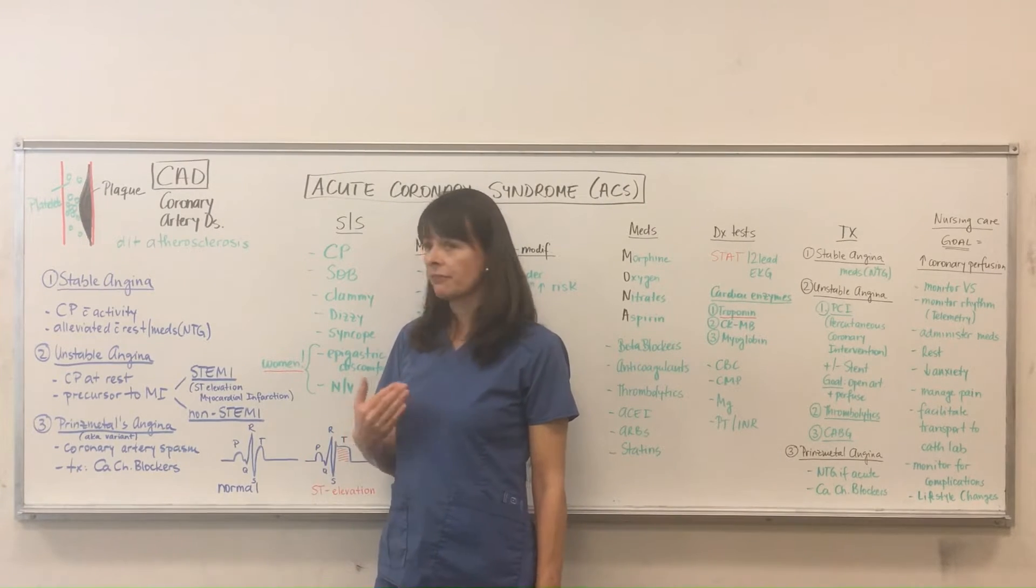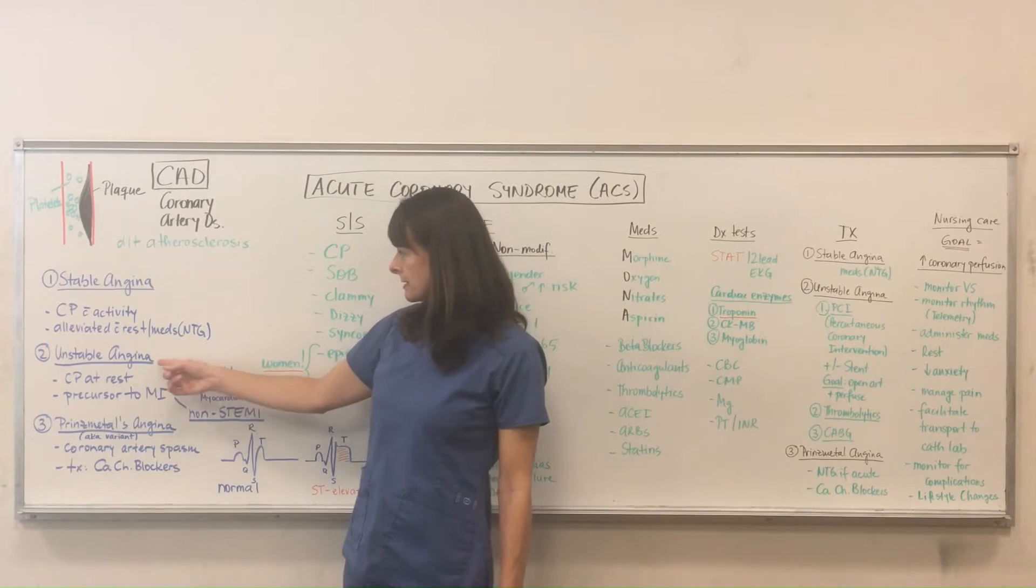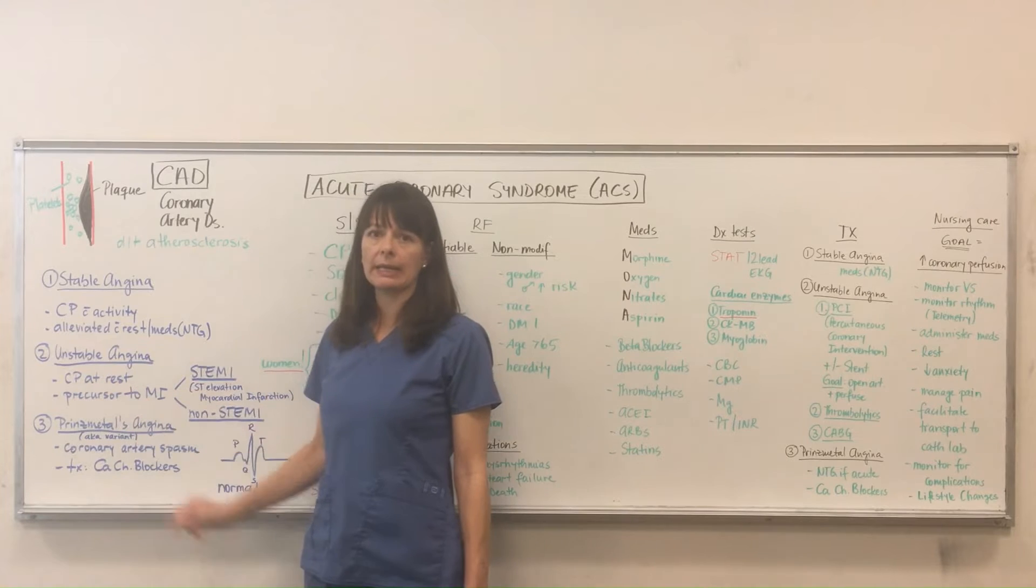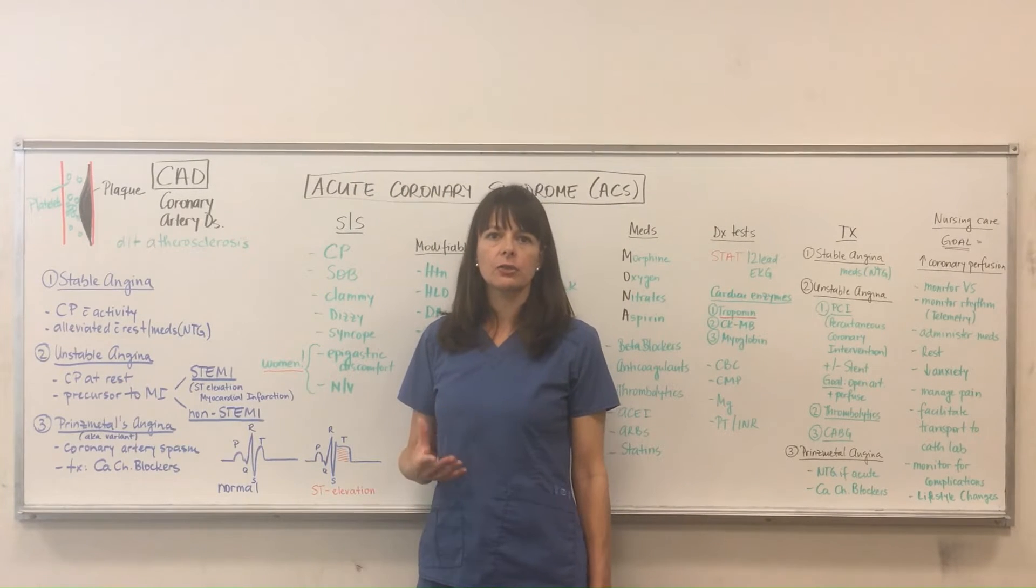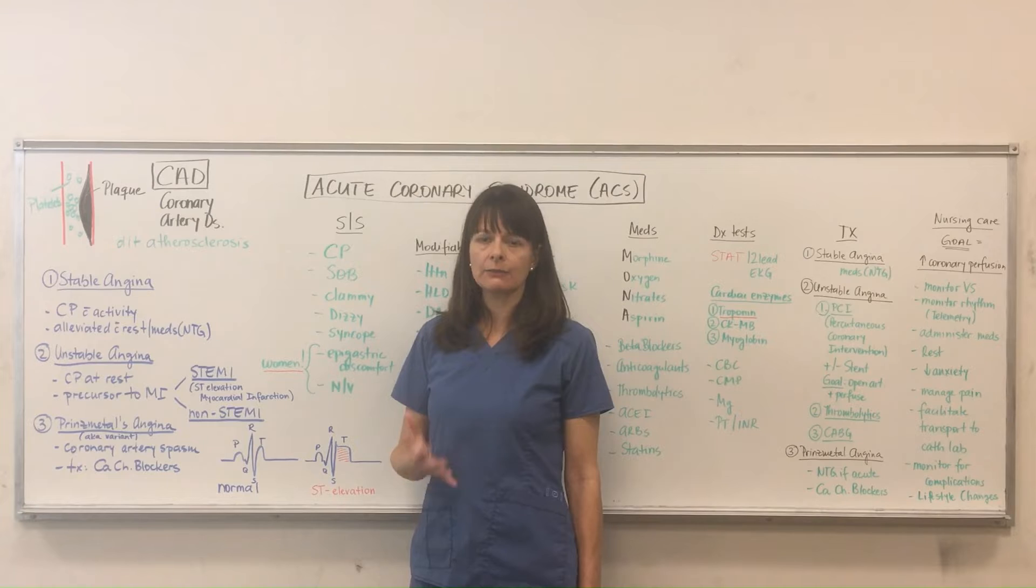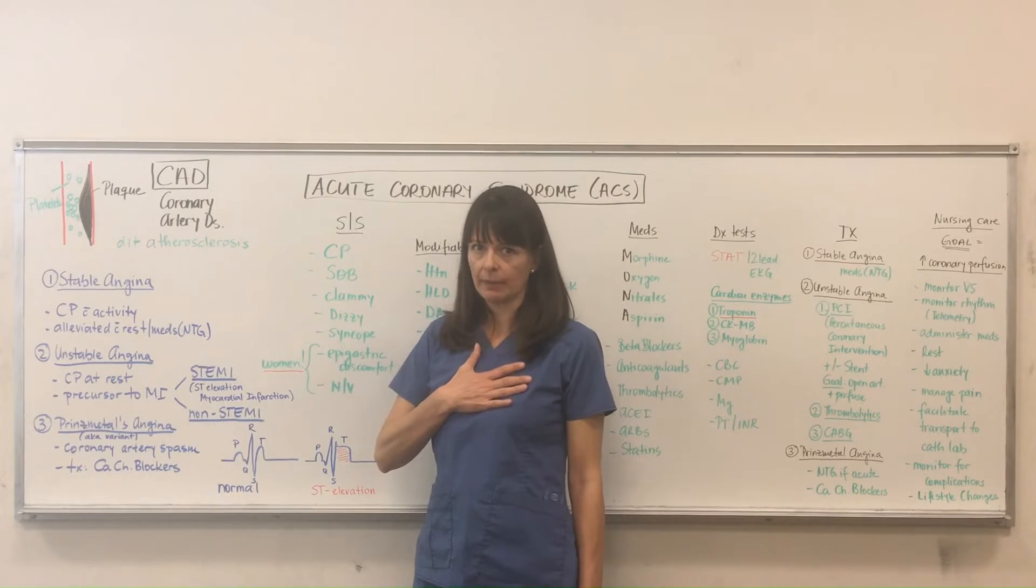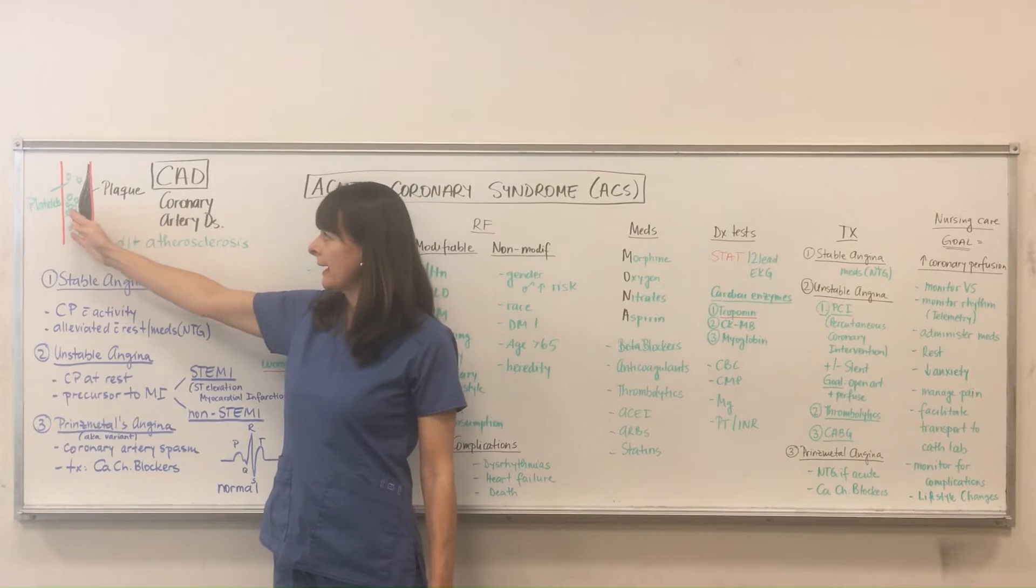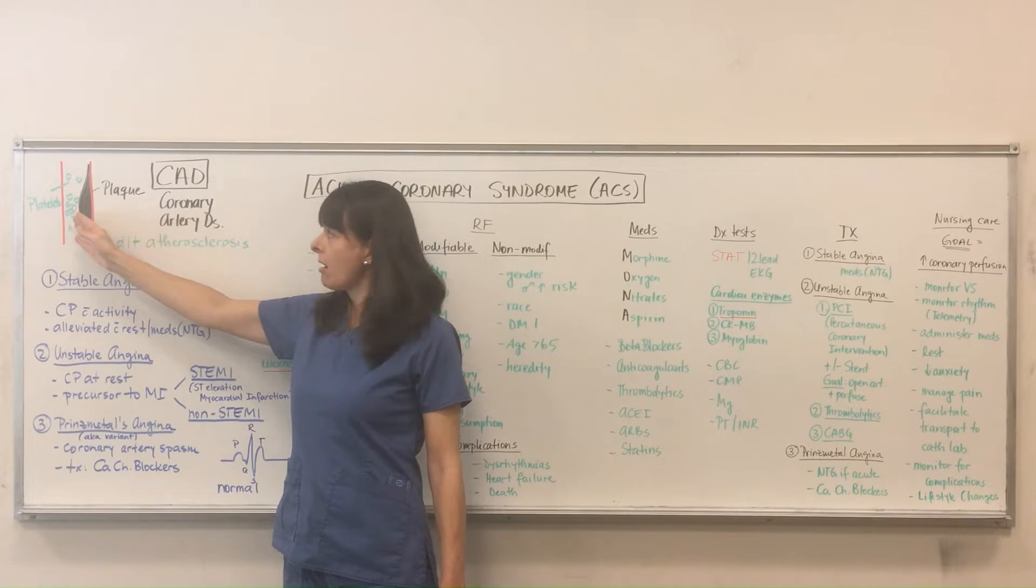Now the more severe case is unstable angina, which basically means that the patient has chest pain at rest. Now they're just resting, they're not exerting themselves, they're not physically active, but they are having chest pain, which means when we look back at our artery, that artery is getting more and more clogged.